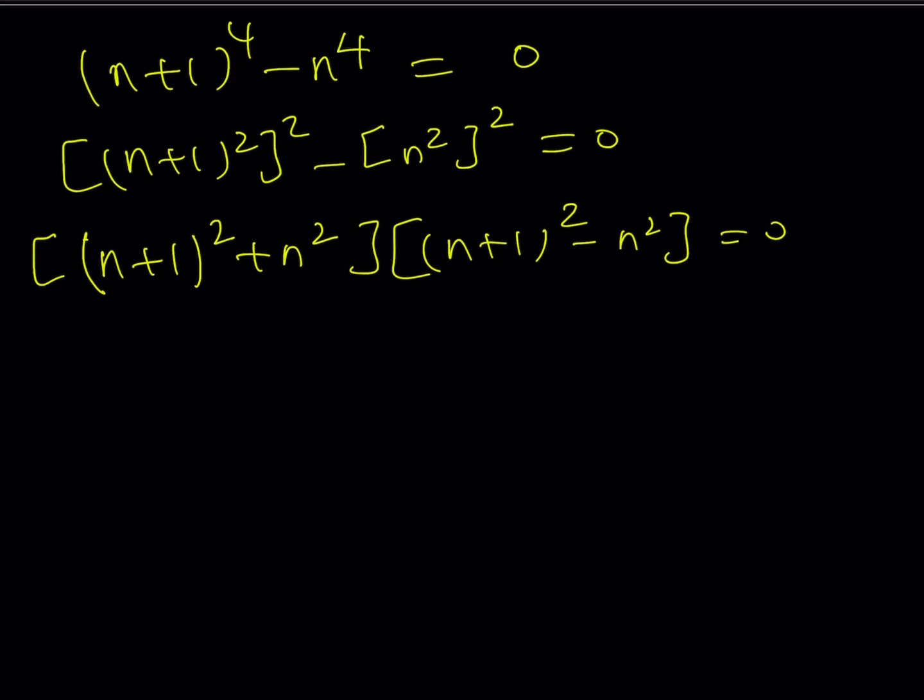From here we get [(n + 1)² + n²][(n + 1)² - n²] = 0. The left-hand side factor gives us 2n² + 2n + 1. The other factor gives us 2n + 1 = 0. This is where our real solution comes from.